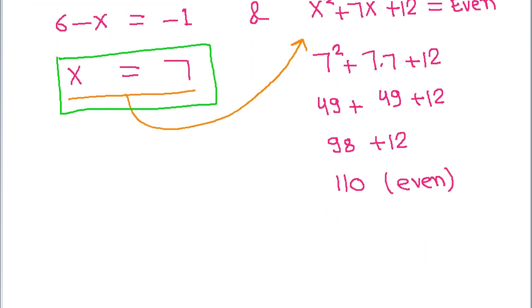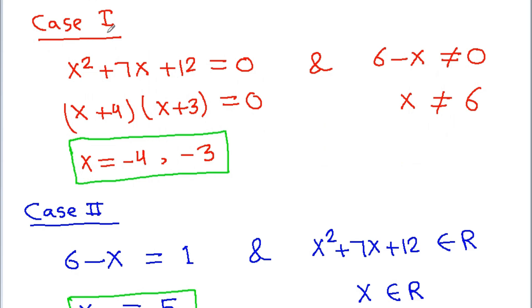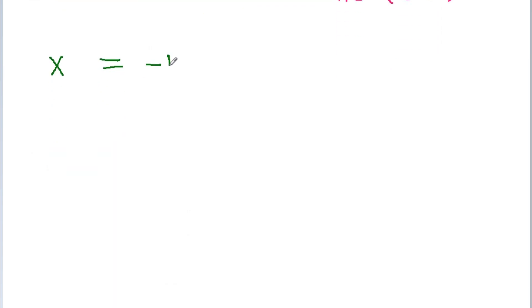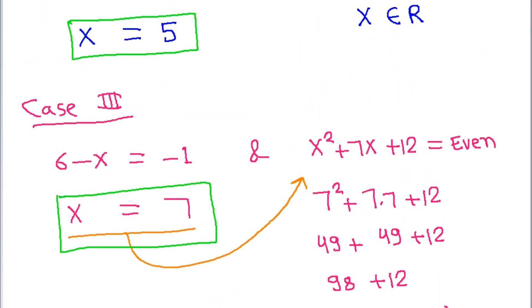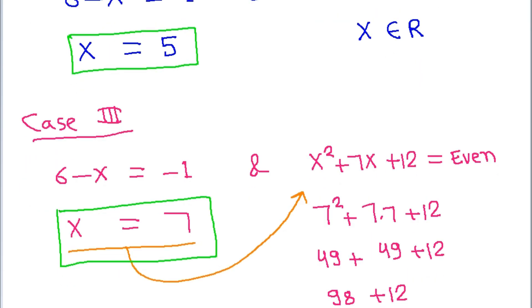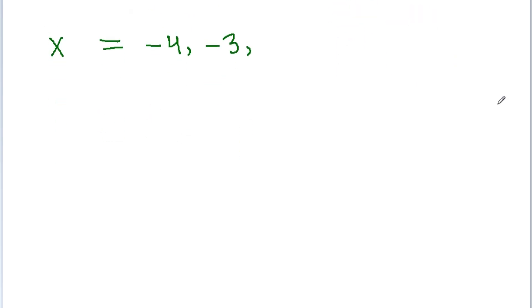So the values of x are: from Case 1, x = -4 and x = -3; from Case 2, x = 5; and from Case 3, x = 7. These are the four values of x.